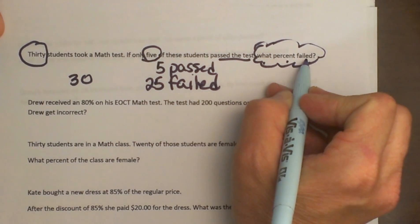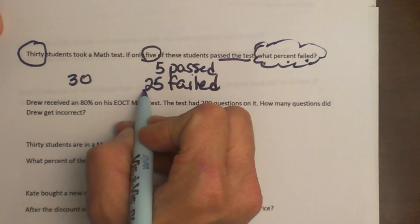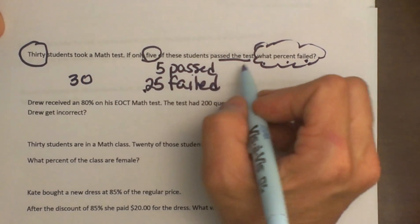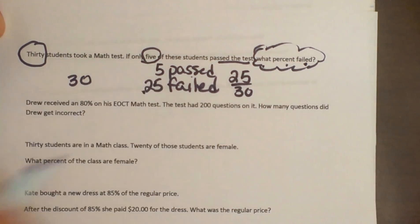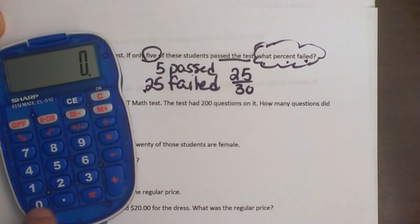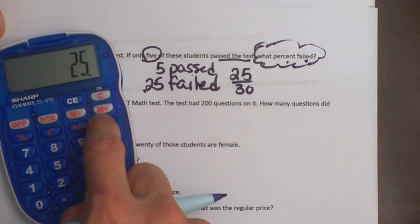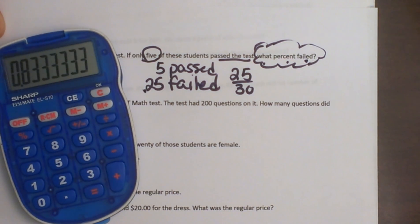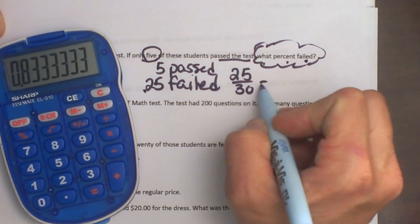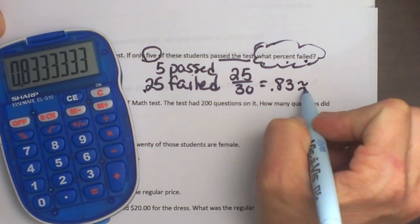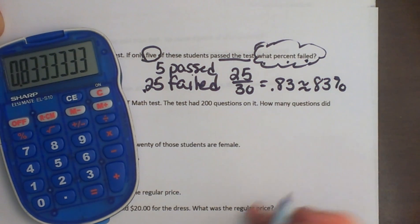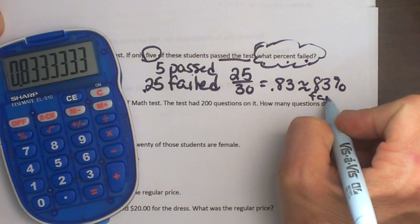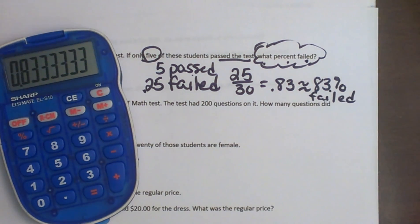What percent failed? Well 25 failed out of 30, so you always do the part over the whole to figure out the percentage. So 25 failed out of the 30. So let's take 25 divided by 30 and we get 0.83 repeating which is approximately 83%. So 83% of our students failed.